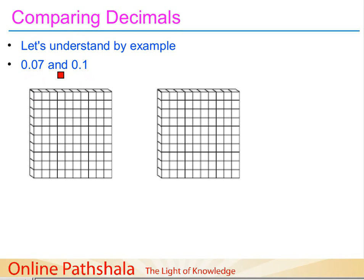We are trying to find which one is smaller. Let's start with 0.07 — it means 7 parts of 100, or 7 by 100. When I say 0.1, I mean it is 1 part of 10.